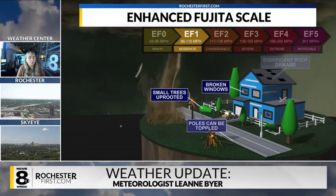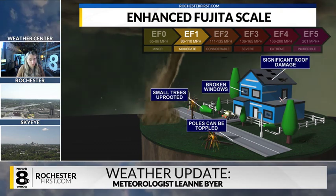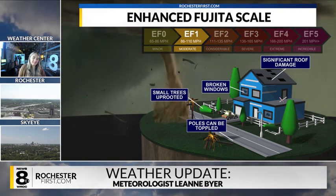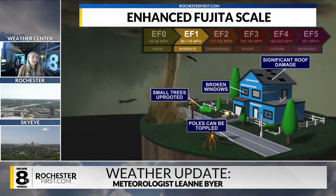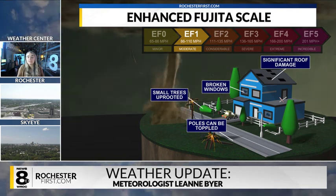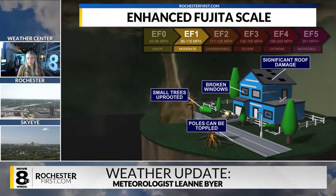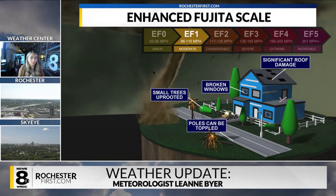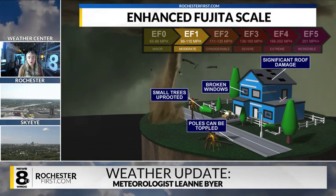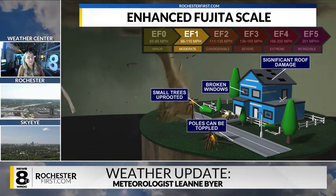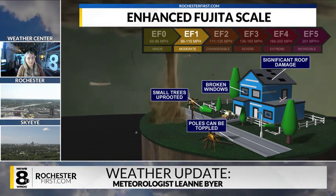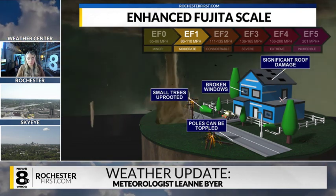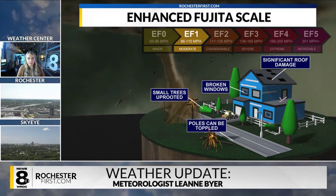Heading now to EF1 tornadoes, which have a wind speed range between 86 and 110 miles an hour, where we could see some moderate damage. We could see some small trees uprooted, broken windows, poles toppled over, and significant roof damage — a little bit more damage than EF0.